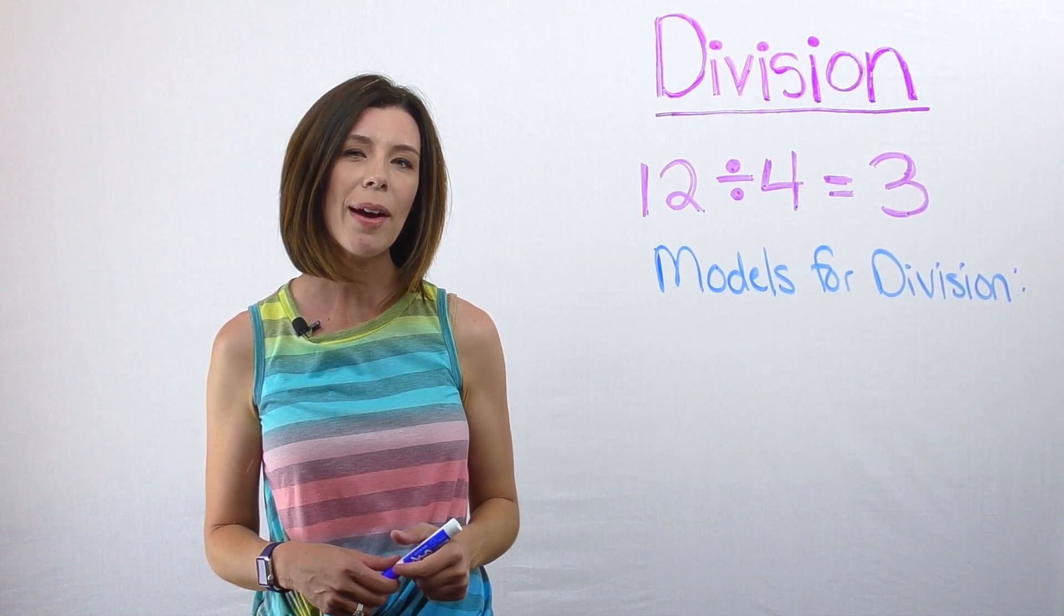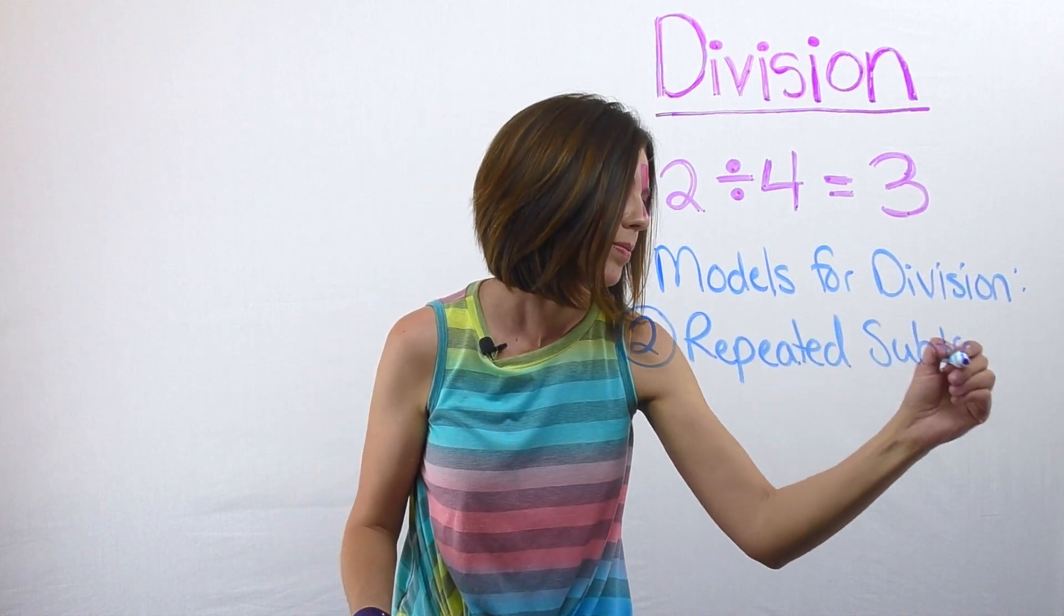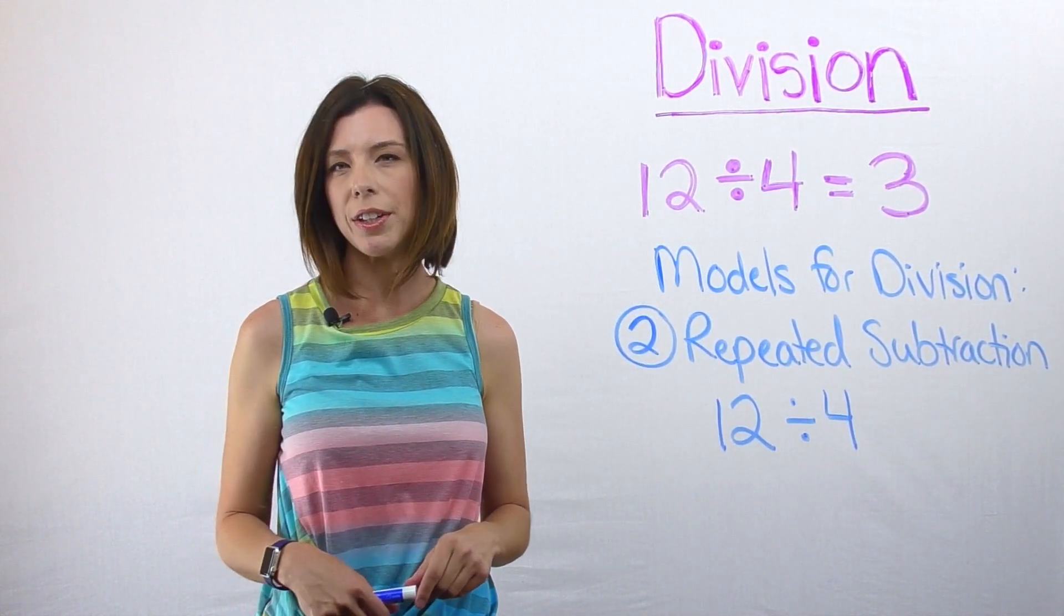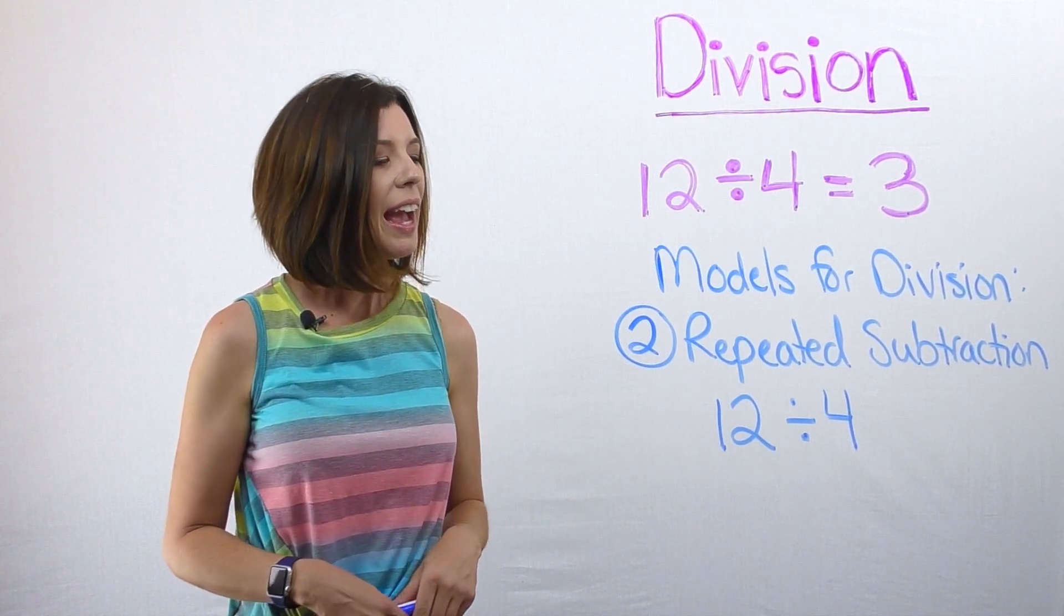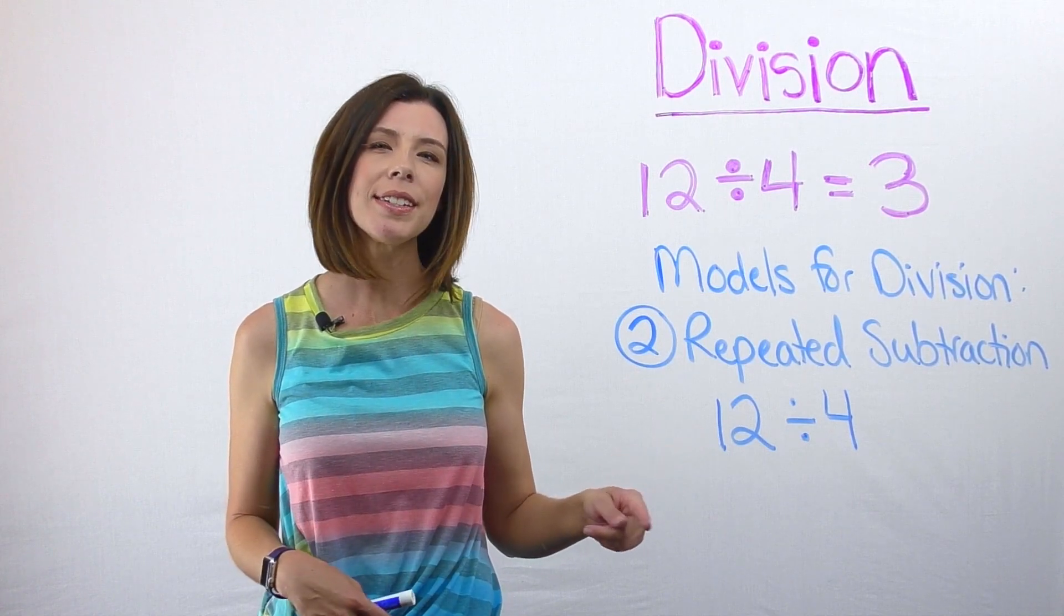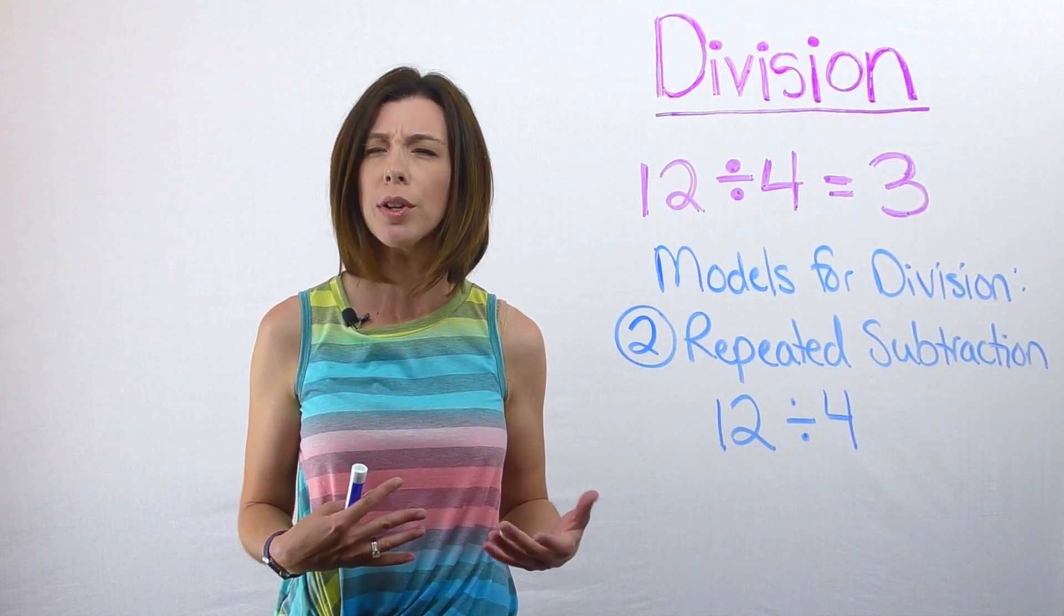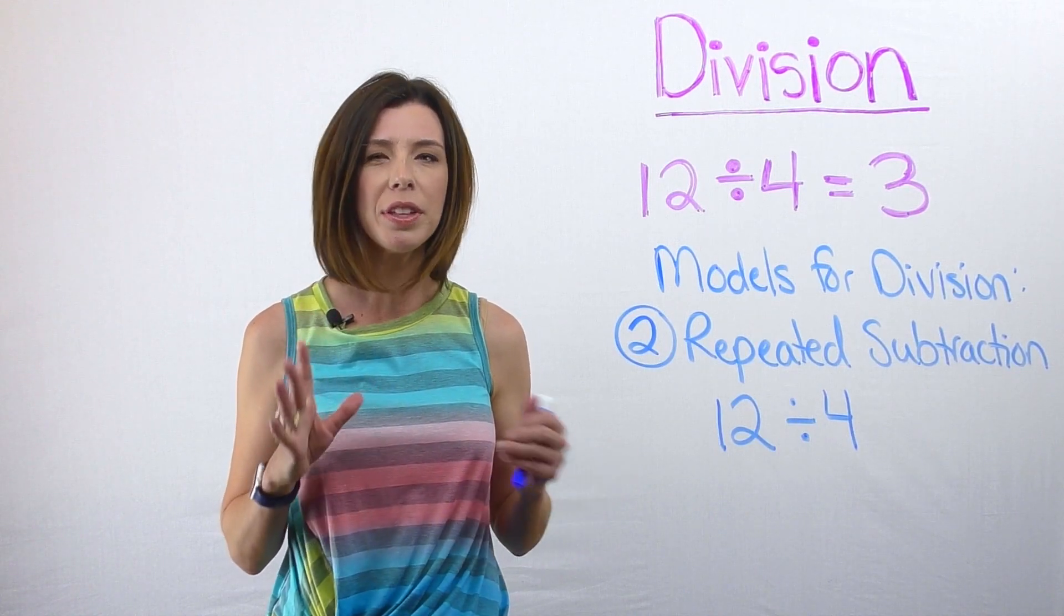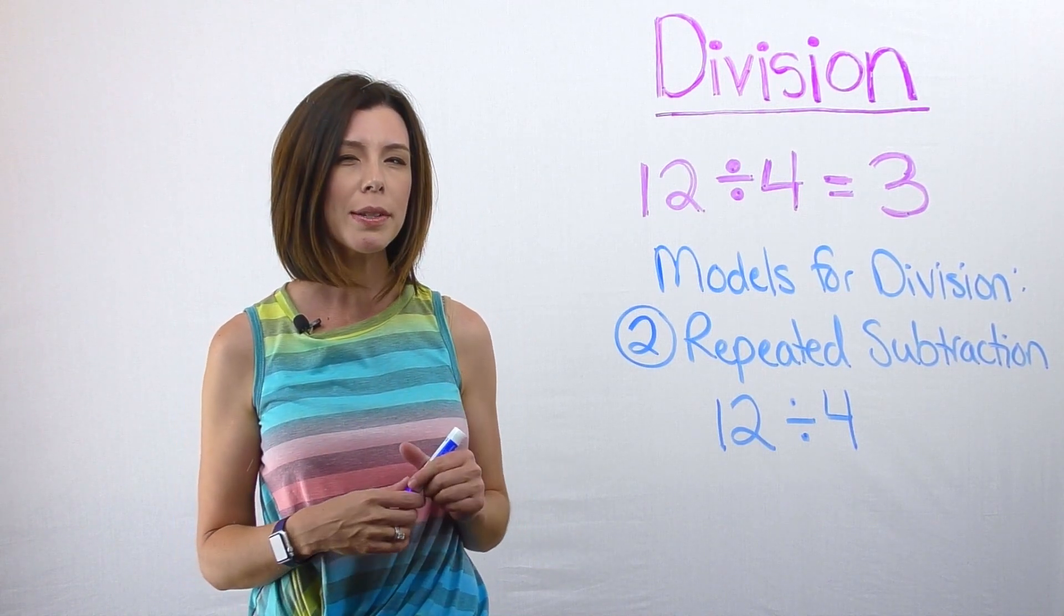The second model I want to talk to you about is the repeated subtraction model. Think of a scenario where I tell you that I need to make a banana cream pie. I have 12 bananas, and each pie is going to require four bananas. My question to you is, how many pies can I make? Here's how this model looks a little different than our fair sharing model. Let me draw some bananas.